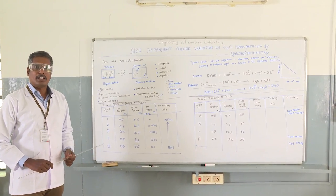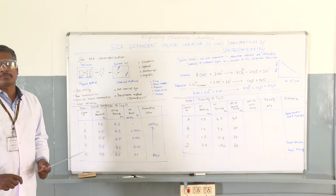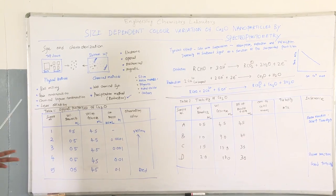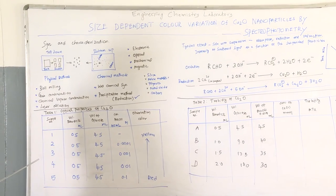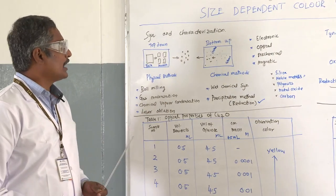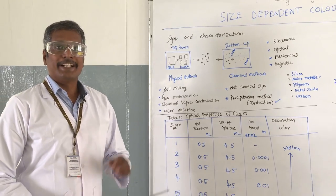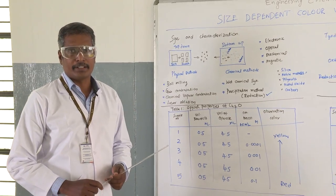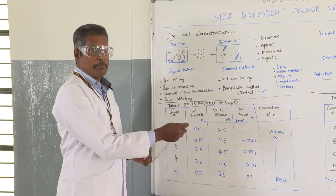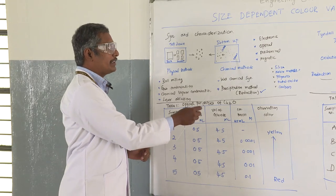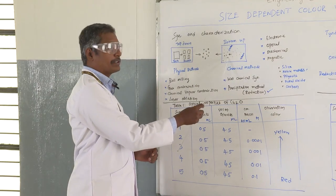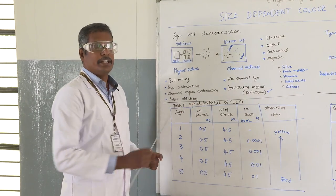Nanoparticles are very small particles which are of 10 to the power of minus 9 meters, which we cannot see by our naked eye. In broad terms, these nanoparticles can be synthesized in two broad ways: the top-down method and the bottom-up method. The top-down method involves breaking down the bulk material into smaller and smaller particles until it reaches the nanoparticle size. In the bottom-up process, atoms in solution are reduced and then combine together to cluster and form nanoparticles.